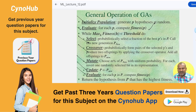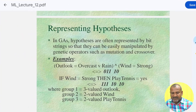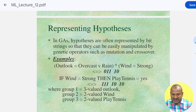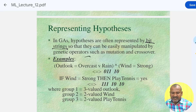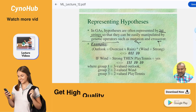Next is the representation of the hypothesis. Hypotheses play a very important role in genetic algorithms. In genetic algorithms, hypotheses are often represented as bit strings so that they can be easily manipulated by genetic operators such as mutation and crossover. These two are the major operators.